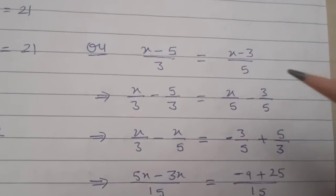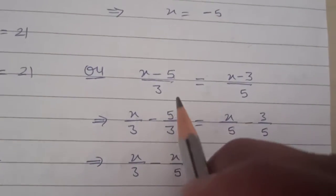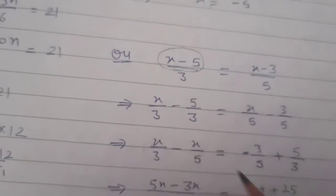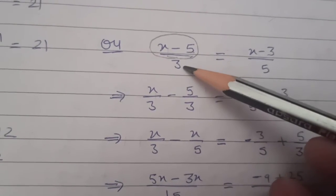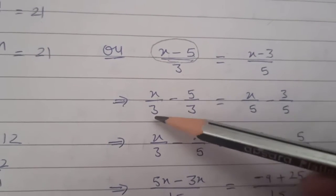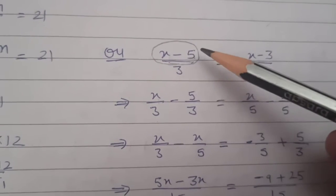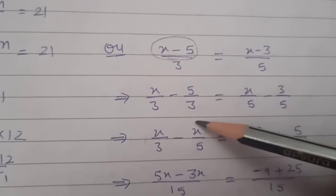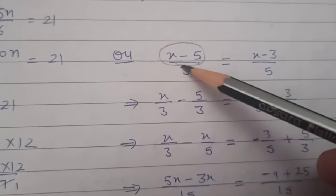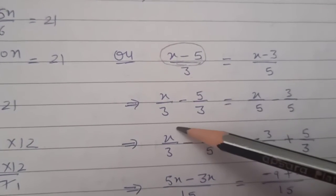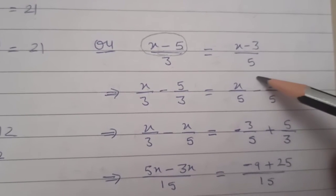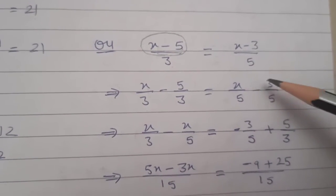Now question number 5: x minus 5 upon 3. Look at this carefully — the numerator is a binomial. So how do we solve this binomial? The 3 in the denominator will come under both terms: x upon 3 minus 5 upon 3. Likewise, x minus 3 upon 5 can also be written as x upon 5 minus 3 upon 5 — this is the reverse of the LCM process.